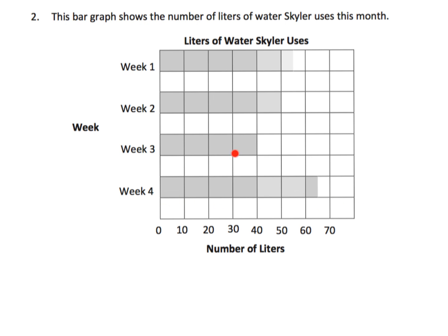Now we have what looks to be a horizontal bar graph, and I'm looking at the number of liters. This bar graph shows the number of liters of water that Schuyler uses this month. I want students to recognize it's a horizontal bar graph, notice the title 'Liters of Water Schuyler Uses,' and see that the bottom axis is the number of liters going up by tens. The weeks — week one, week two, week three, week four — are listed on the side.